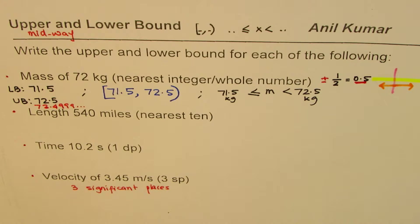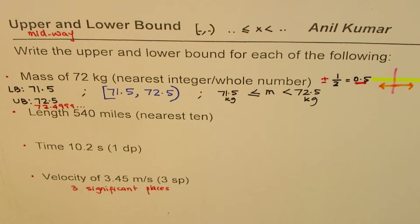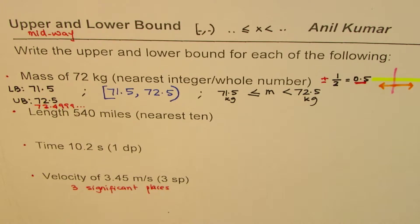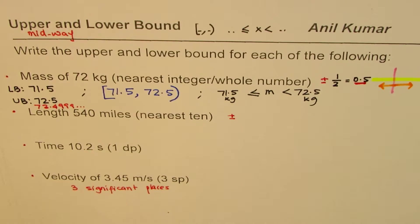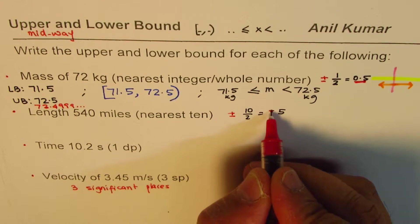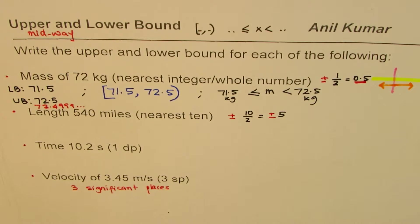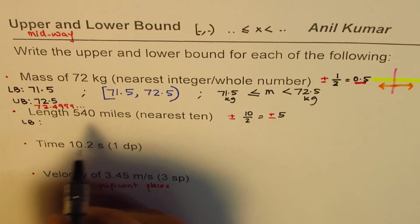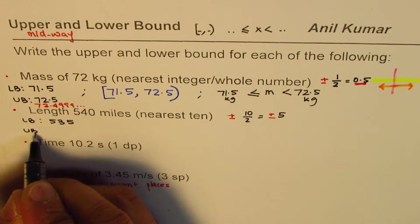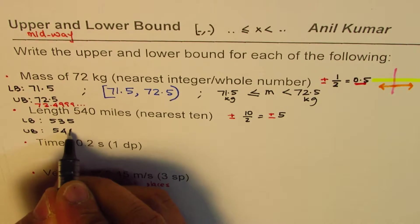Let's now continue. You can pause the video now, answer the rest of the questions and check your answer. When we are saying 540 miles nearest 10, what should you add and subtract? We should do plus and minus half of 10, which is 5. So we are going to add and subtract 5 to 540 to get lower and upper bound. The lower bound is 535 and the upper bound will be 545 miles.